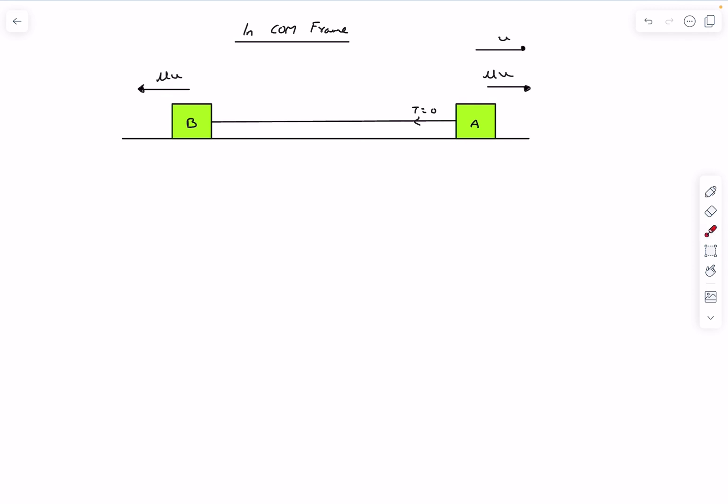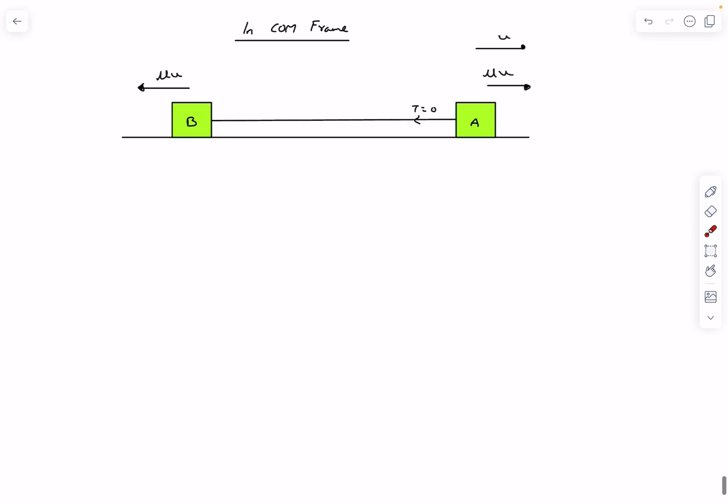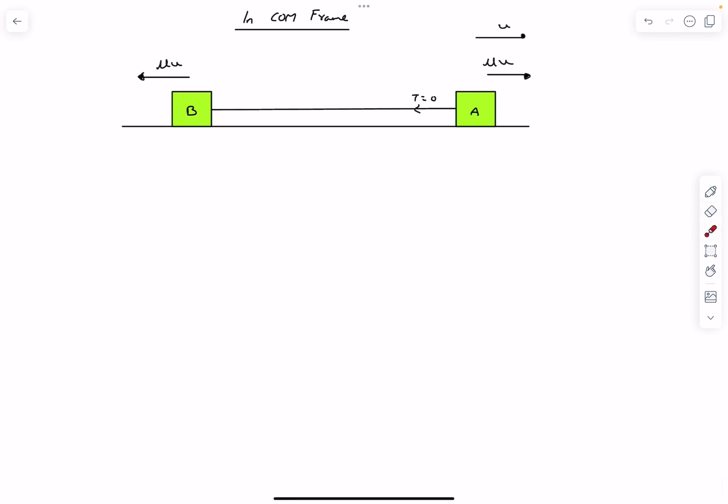This is the initial configuration in the center of mass frame. Now as you can see, as this block is moving towards the right and this block is moving towards the left, the string must elongate by a little bit.